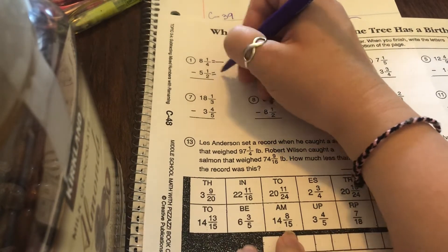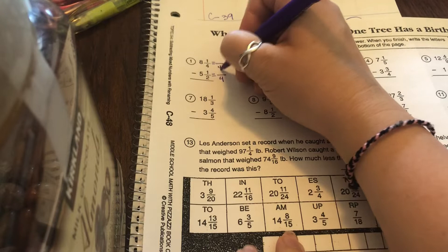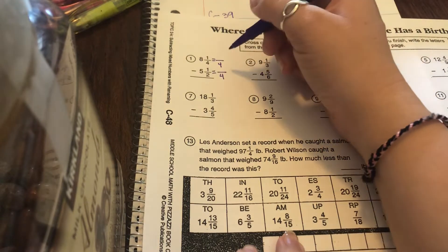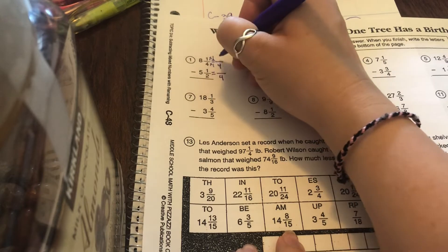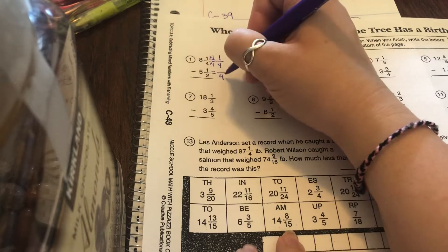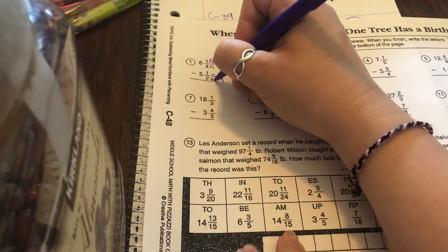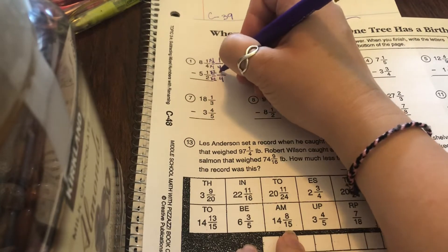So there's my common denominator. Now what did you multiply the 4 by to become 4? 1. So 1 times 1 is 1. 2 times what is 4? 2. So 1 times 2 is 2.